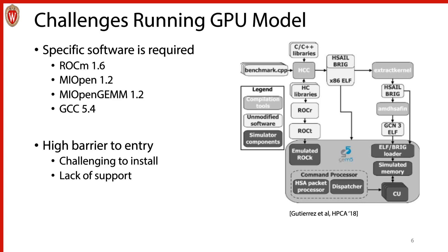We saw exactly how many different libraries we need to get up and running for these modern GPU applications. The main challenge is that we need very specific versions of them. The base version of ROCm we can use is version 1.6 — anything newer just isn't supported in our GPU model. This requires very specific versions of the libraries: MIOpen and MIOpenGEMM need to be version 1.2, and compiling some libraries from source requires GCC 5.4. Naturally, this leads to a high barrier to entry.